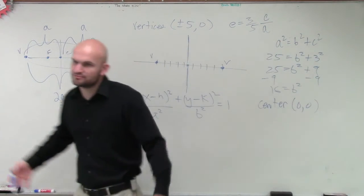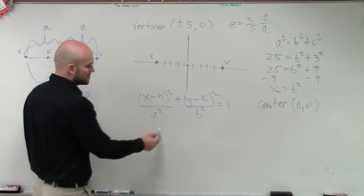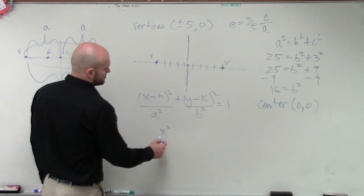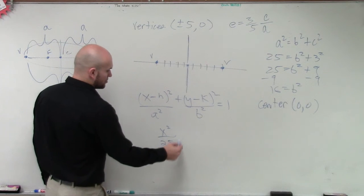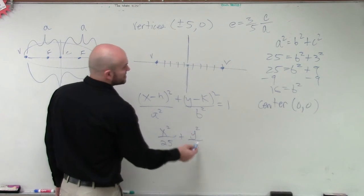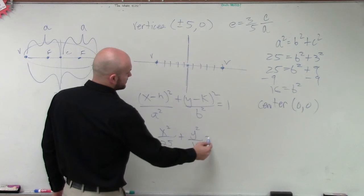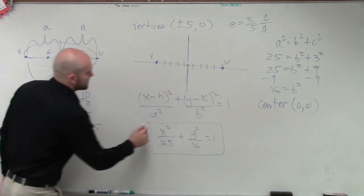So x minus zero is x. I'm not going to write x minus zero plus y minus zero. I'm just going to write x squared divided by a squared, which is 25, plus y squared. Y minus zero is y, so it's y squared, divided by b squared, which is 16, equals 1, and that's it.